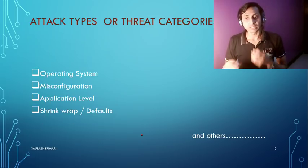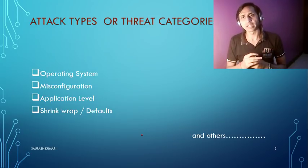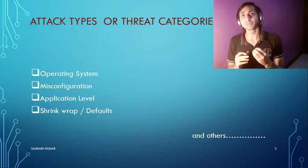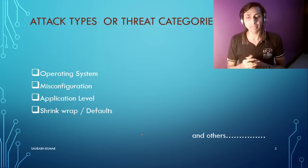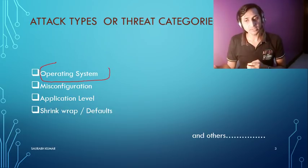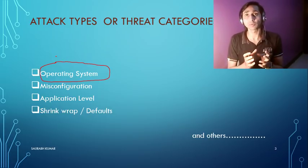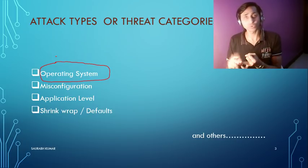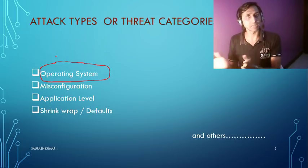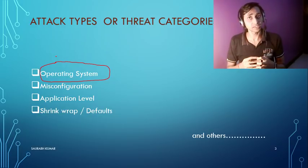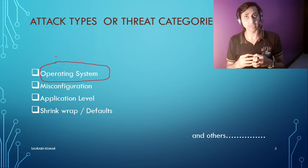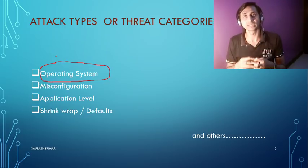When we talk about attack types, the first type is operating system attacks. This applies to system operating systems as well as the OS of networking devices like router IOS, switch IOS, or firewall OS. Every operating system may have vulnerabilities, so make sure you always download patch files to keep your operating system updated with the latest security fixes to reduce the chances of an attack.